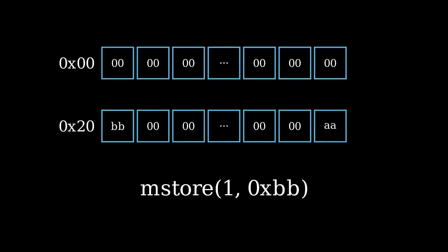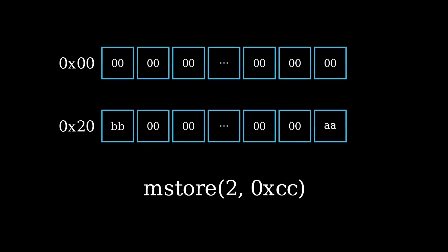Let's look at one more example. mStore(2) with the value 0xCC will write the value CC starting from memory location 2. This value CC is padded with zeros to the left so that it is exactly 32 bytes. When we write this 32 bytes starting from memory location 2, the one byte of value BB at the beginning of the second row will first be overwritten with 00. In the next slot, the value 00 will be overwritten with the value CC. In the next video, we will write some Solidity code to store data into memory using assembly.